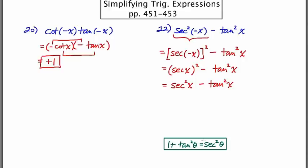And if we look at the identity, which I've written for you at the bottom, the Pythagorean identity, if we isolate one, we get one equals secant squared minus tan squared. So this equals one.